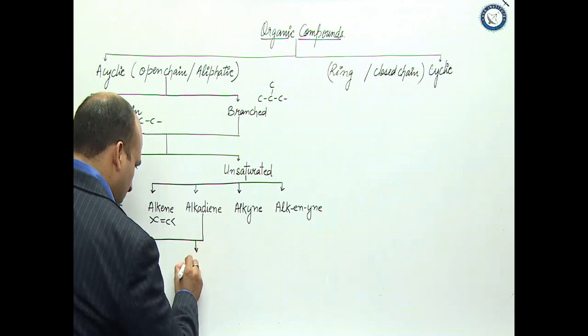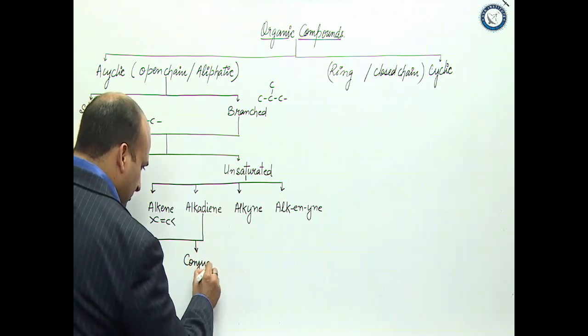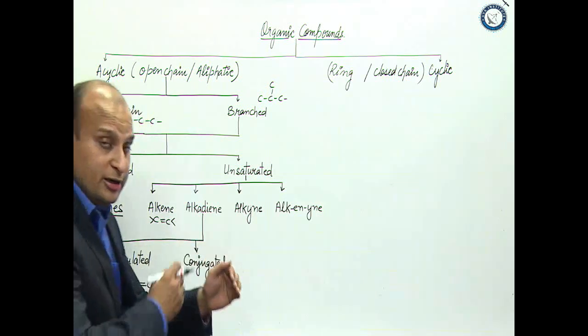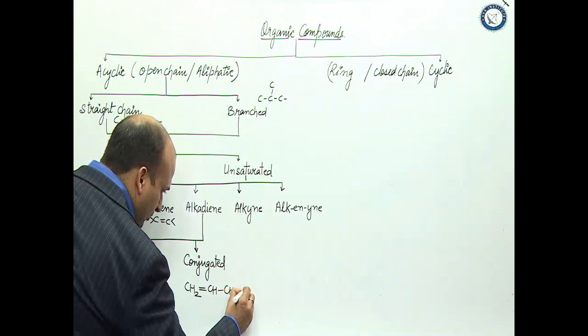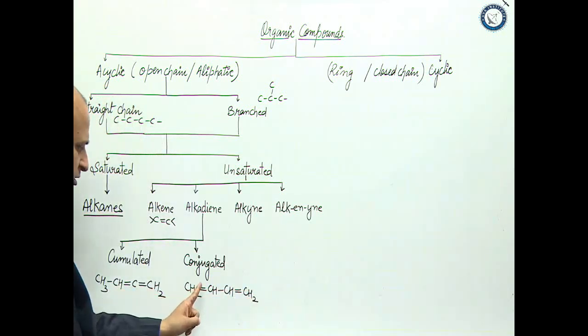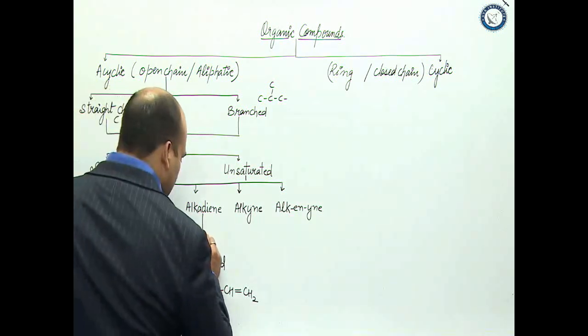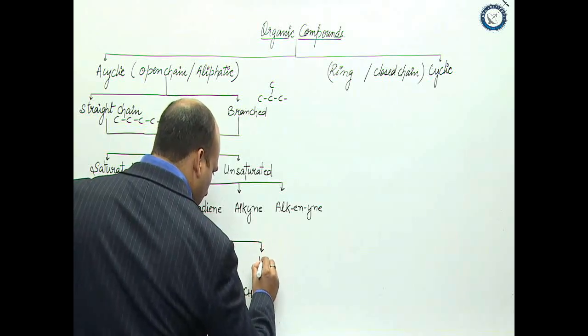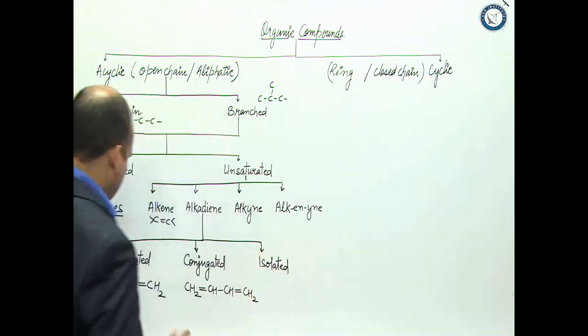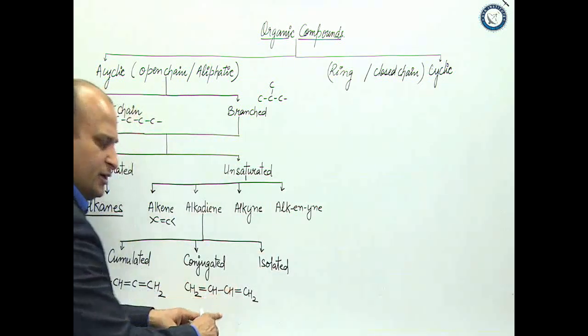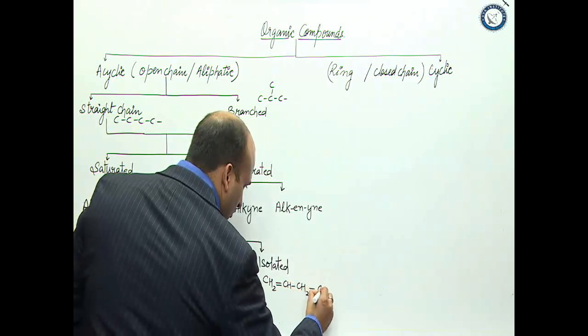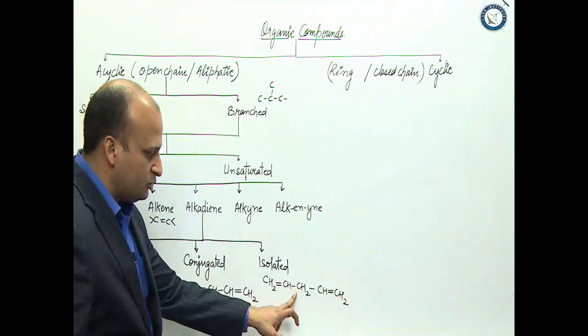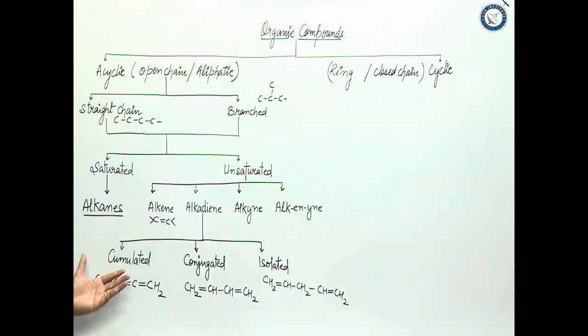The second possibility is conjugated diene, where there is alternate presence of double bonds, like CH2=CH-CH=CH2. This is double, single, double, alternate - so this is conjugated. Third case is when you are talking about isolated double bonds, where they are not next to each other, they are not alternate, they can be anywhere.